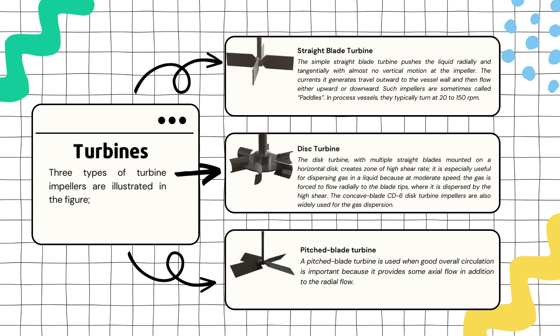The next type of turbine is a pitched blade turbine. The pitched blade turbine is chosen when you need good overall circulation, not just radial flow. It provides a combination of both axial and radial flow, meaning up and down flow and outward flow.